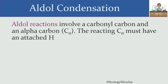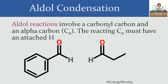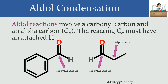What we're going to look at today is a reaction called an aldol condensation. The way you can spot an aldol condensation is that it involves a carbonyl carbon and an alpha carbon. The carbonyl carbon is the one that's double bonded to an oxygen. The alpha carbon is the carbon immediately adjacent to the carbonyl carbon itself — that's the one that's going to be reacting with our carbonyl carbon.